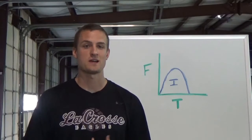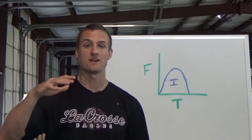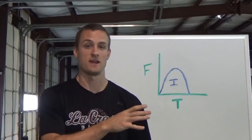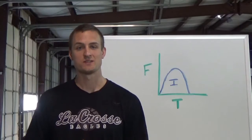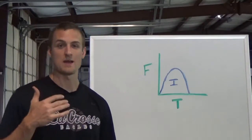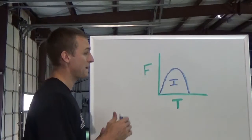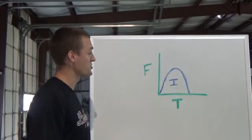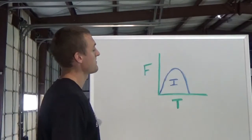Your stride length is determined by your time in the air multiplied by your velocity in the air. So how would you increase stride length? Well, you would try to get more time in the air. That would require a bigger vertical jump, and a bigger vertical jump is going to require a bigger vertical impulse.